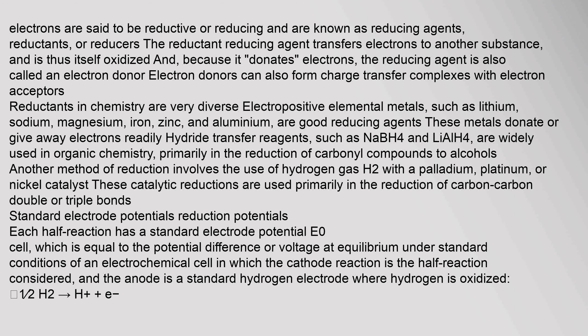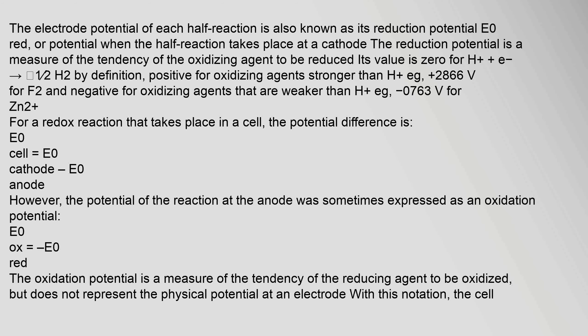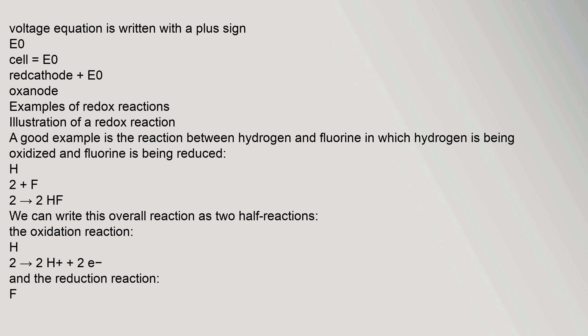Each half-reaction has a standard electrode potential E°cell, which is equal to the potential difference or voltage at equilibrium under standard conditions of an electrochemical cell in which the cathode reaction is the half-reaction considered, and the anode is a standard hydrogen electrode where hydrogen is oxidized. The electrode potential of each half-reaction is also known as its reduction potential E°red — the potential when the half-reaction takes place at a cathode. The reduction potential is a measure of the tendency of the oxidizing agent to be reduced. The voltage equation is written as: E°cell = E°red(cathode) − E°red(anode).